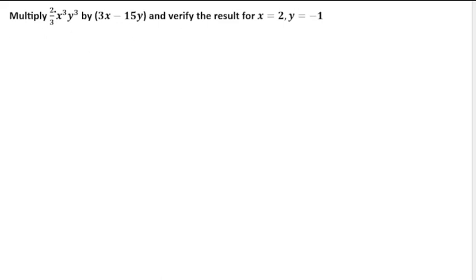Multiply 2/3 x³y³ by (3x − 15y). We need to multiply this expression and verify the result for x = 2 and y = −1, checking whether we get the correct answer both before and after multiplication.